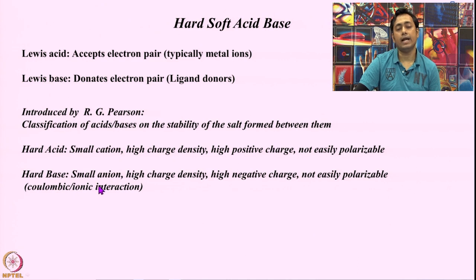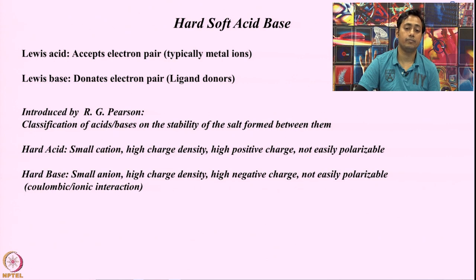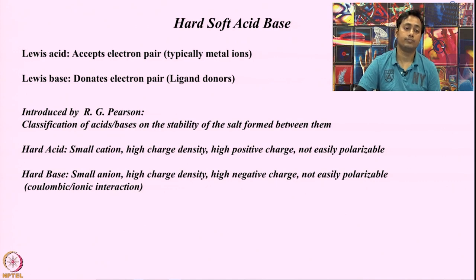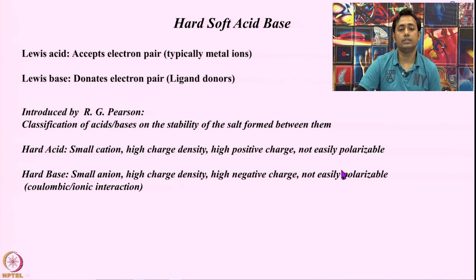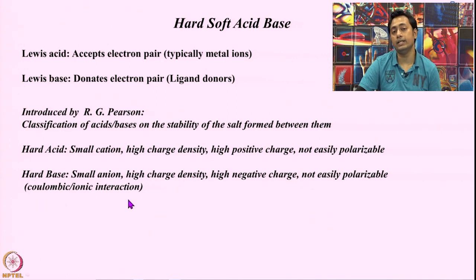Similarly, a hard base is the anionic counterpart. If there is a small anion, small in size, which contains some charge such that the charge density is pretty high and it is also less polarizable — those kinds of systems tend to come together and form a very stable salt. Hard acid and hard base like to interact with each other because of their non-polarizable nature; they keep their charge very distinctly, and the two charged systems come together in the form of a coulombic or ionic interaction. That is why hard acid-hard base systems are very stable.